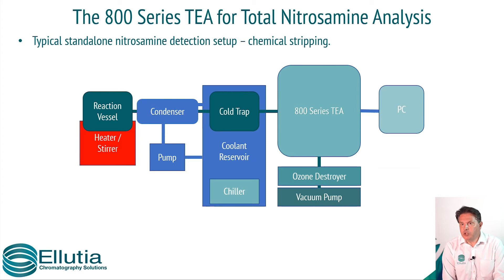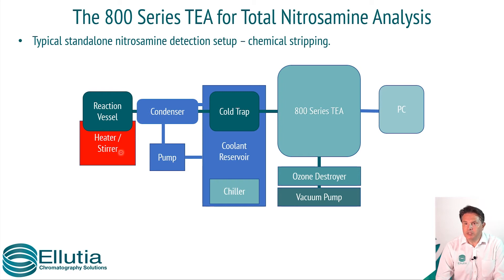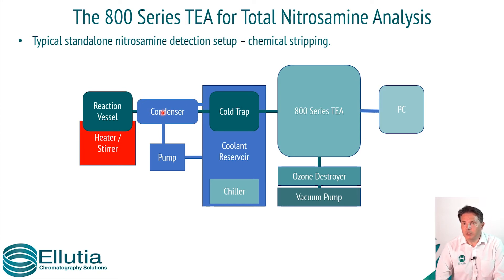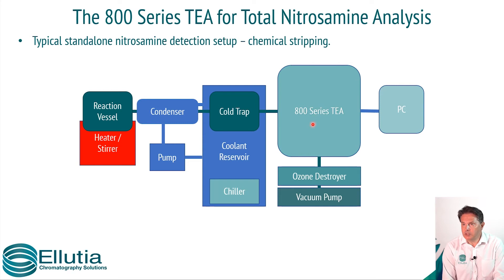This is a generic layout for our glassware system for total nitrosamine analysis. We have a reaction vessel that will contain our hydrogen bromide reagent. This is heated to reflux conditions to release the nitrosyl group. Gases enter the condenser, which crashes out the reaction mixture. This then passes through a cold trap to further prevent any aqueous samples entering the TEA system. The nitrosyl group then enters the TEA system for detection.